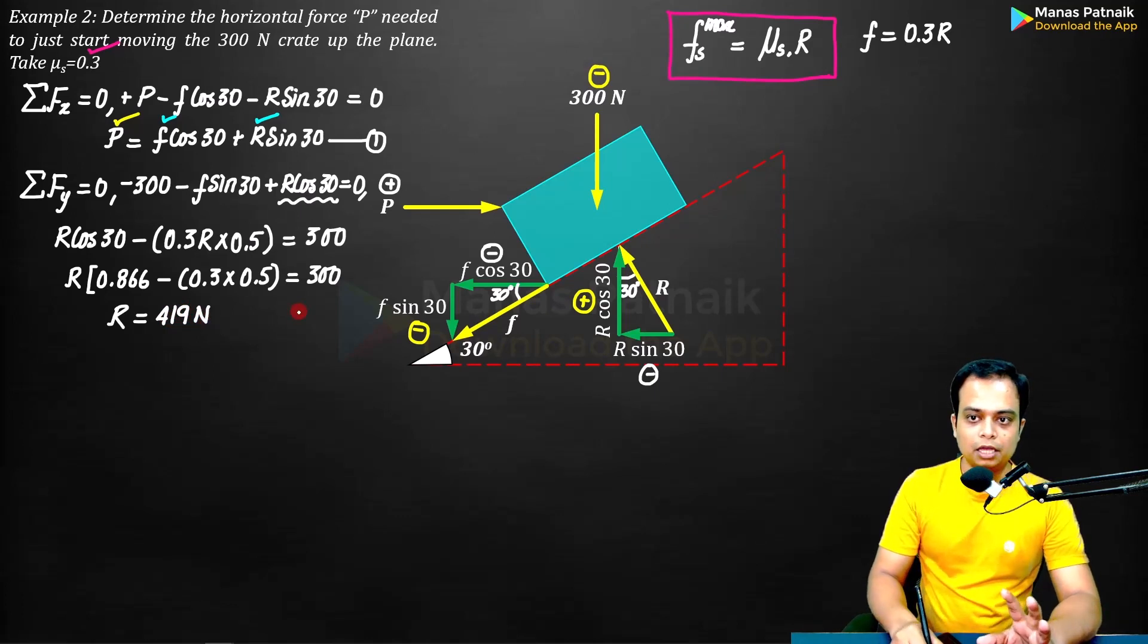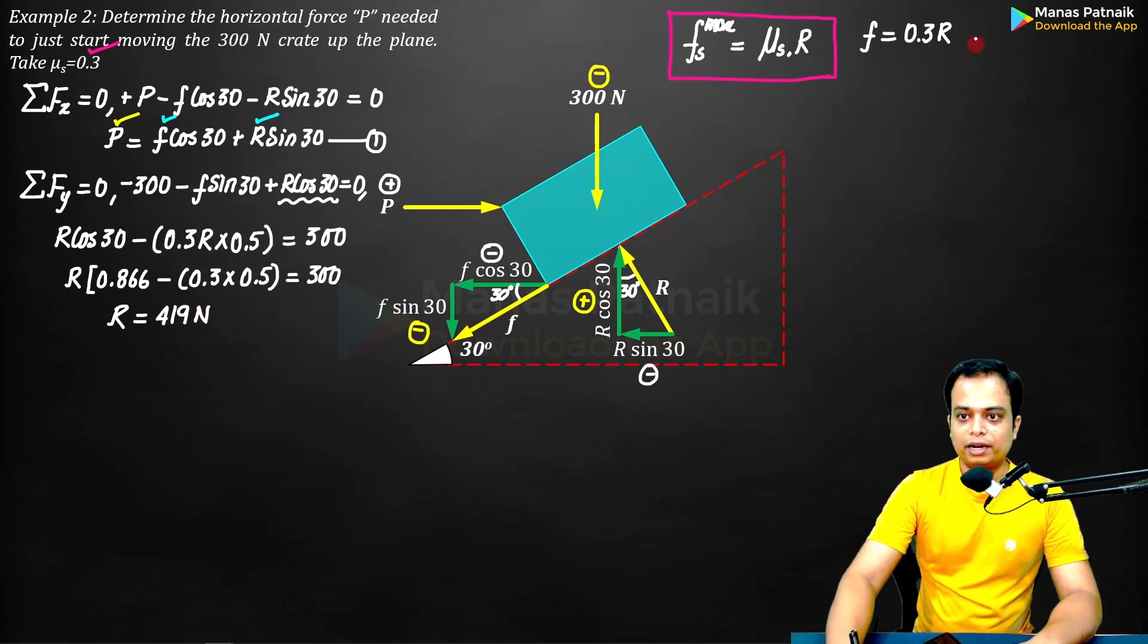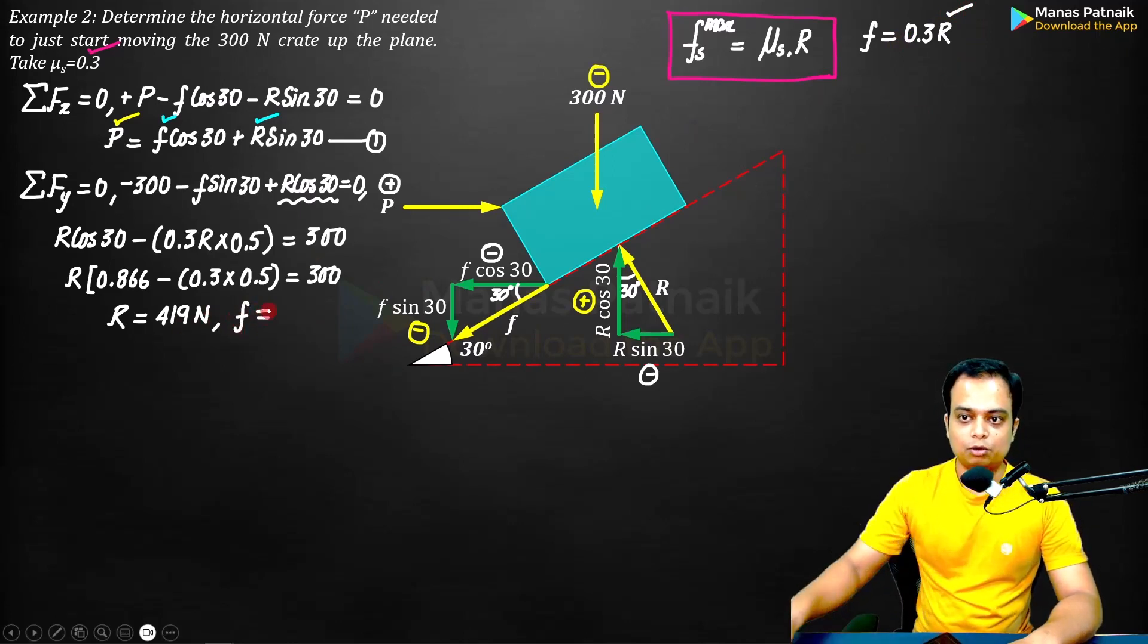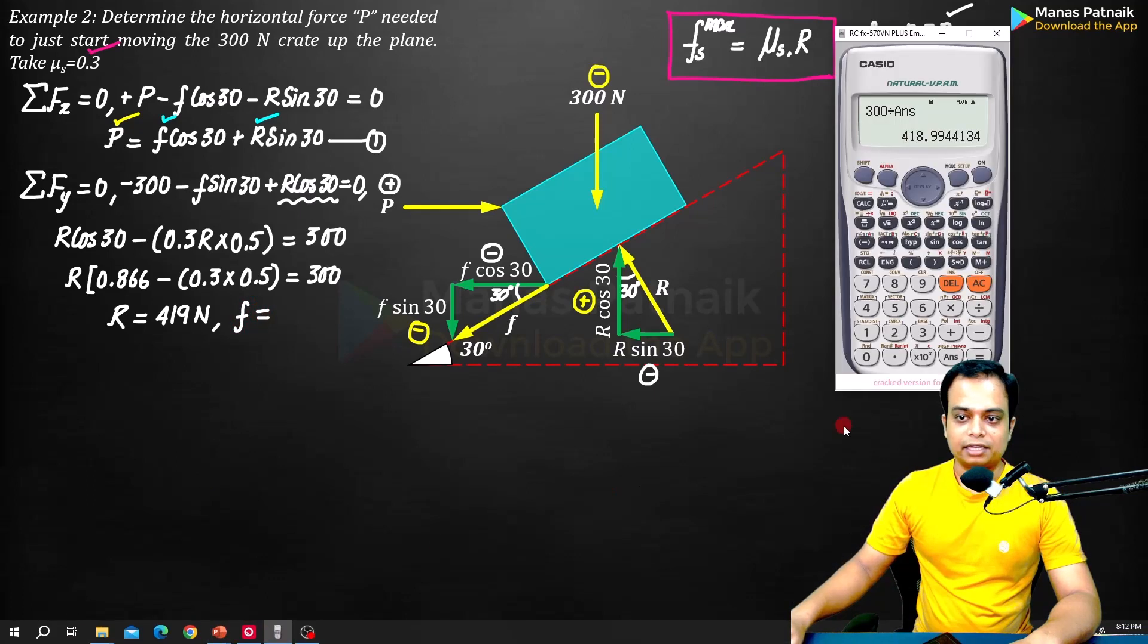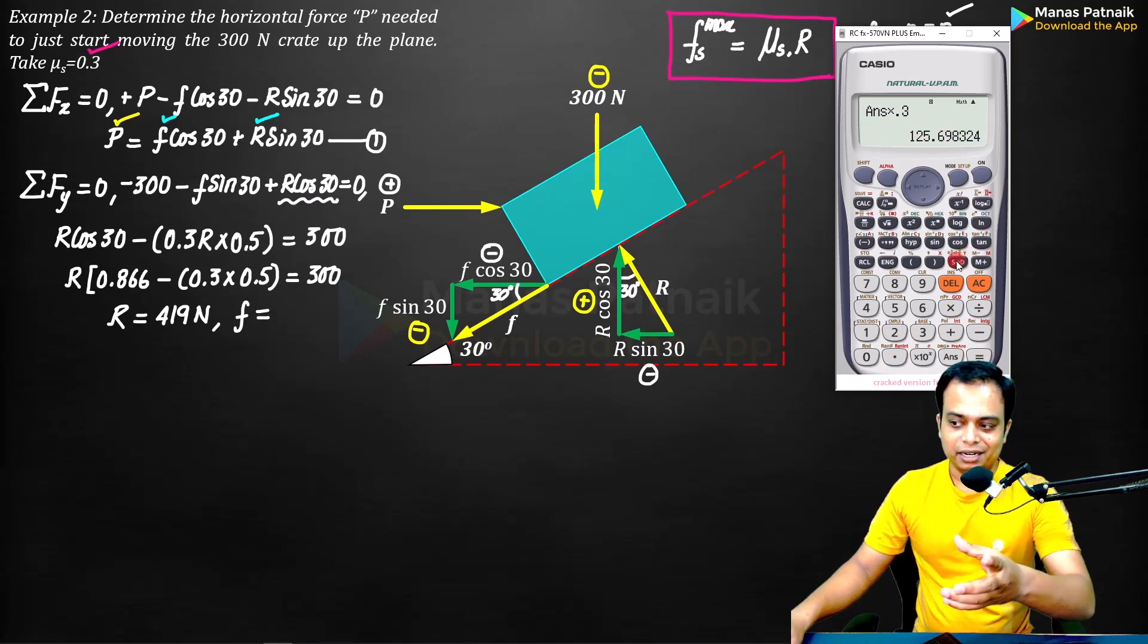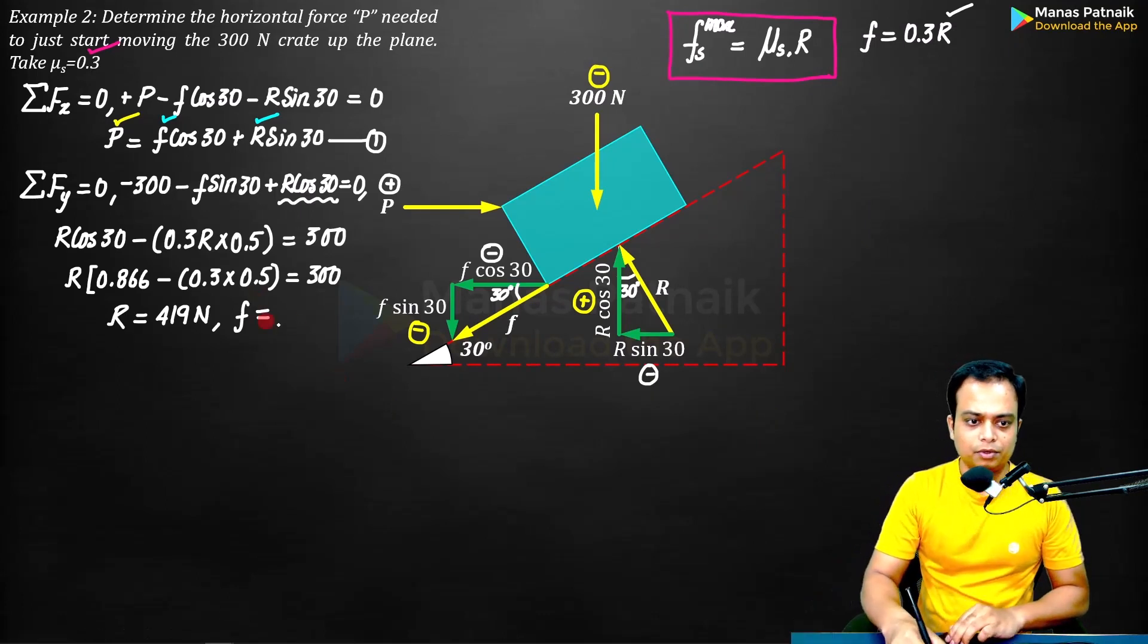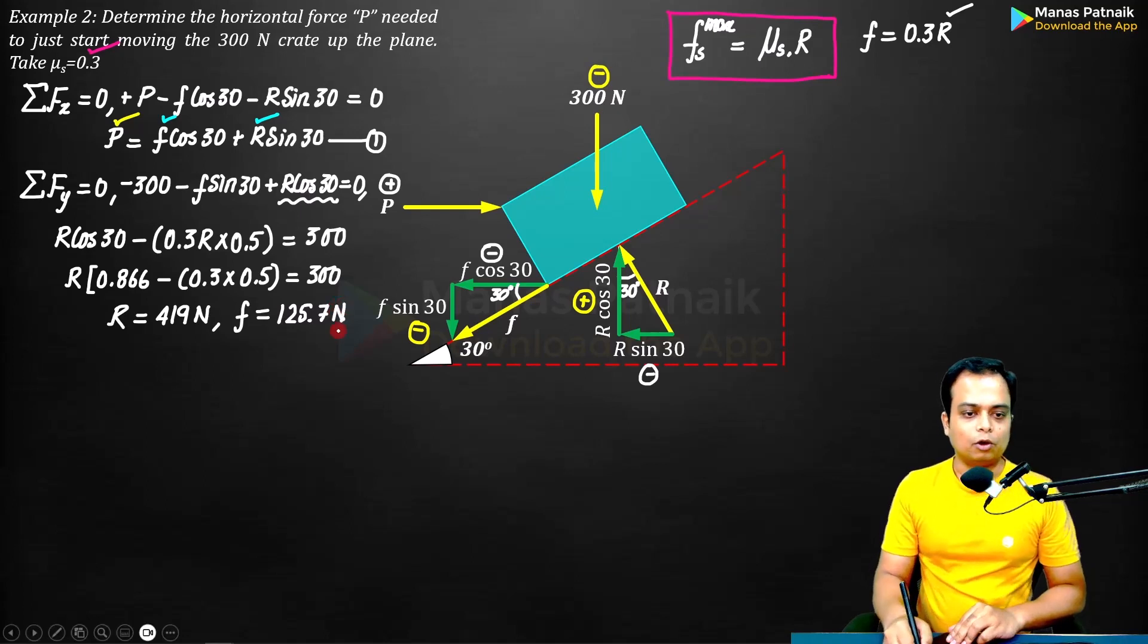Now once you've got this value 419, put it over here and get the value of friction. So let me just place a comma. Friction will be equal to 0.3 times R. Into answer, into 0.3. This is what you get: 125.69, that is 125.7. 125.7 Newtons.